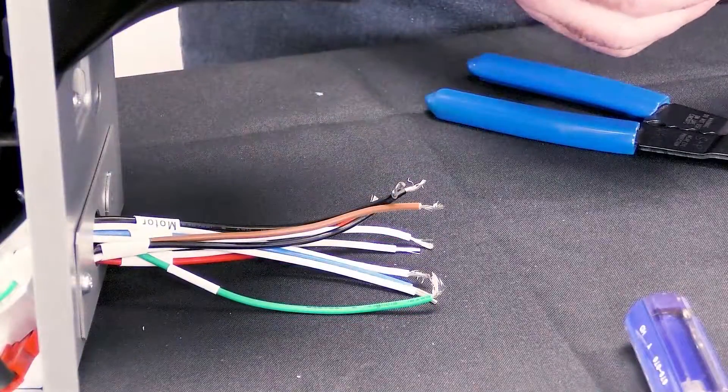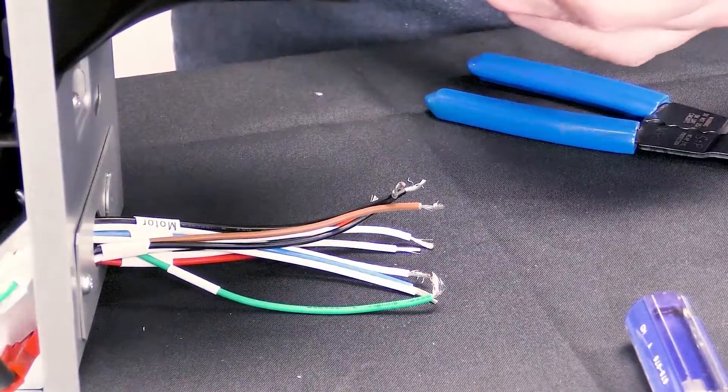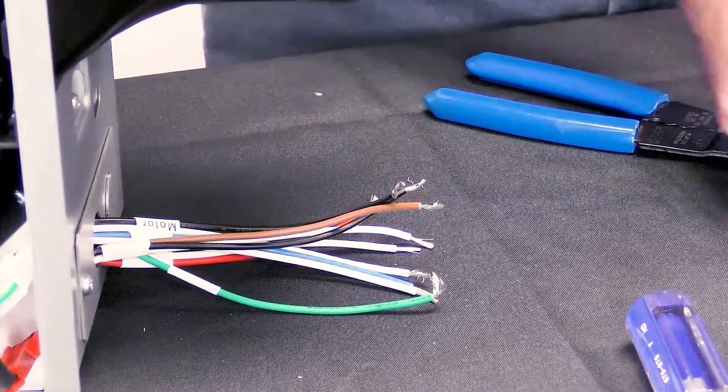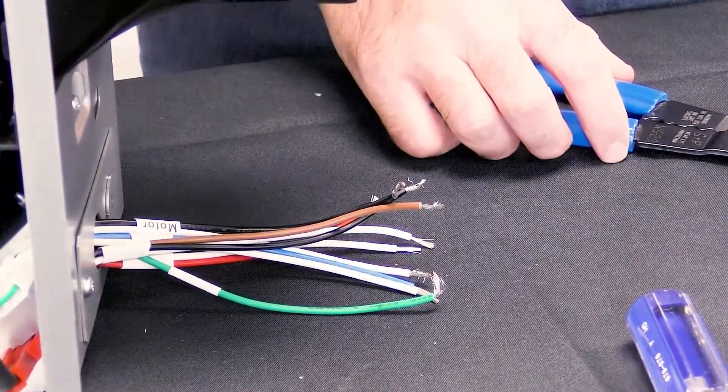Now, let's wire up the fan. Using the wire strippers, strip a half inch off the incoming building supply wires.